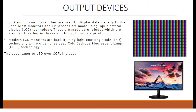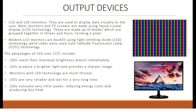LCD and LED monitors are used to display data visually to the user. Most monitors and TV screens use liquid crystal display (LCD) technology, made up of diodes grouped together in threes and fours to form a pixel — with pixels made up of red, green, and blue colors. Modern LCD monitors are backlit using LED technology, while older ones use cold-cathode fluorescent lamp (CCFL) technology. Advantages of LED over CCFL include: LEDs reach maximum brightness almost immediately, produce brighter light and sharper images, monitors are much thinner, LEDs are very reliable and last a long time, and LEDs consume very little power, reducing energy costs and producing less heat.